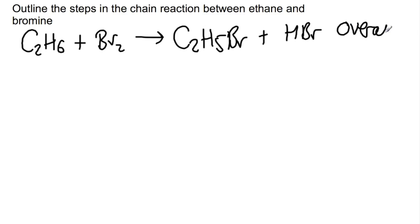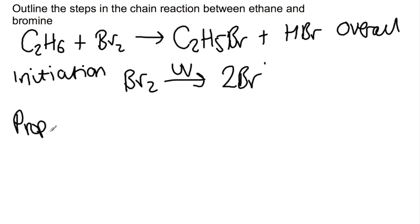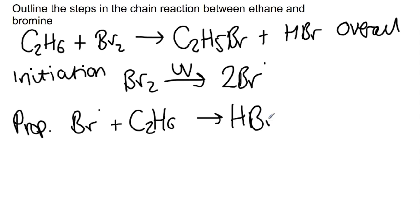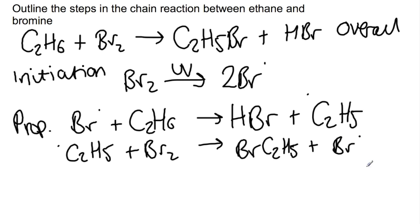The first steps are in the initiation, and this is always the same — you have your halogen with UV light splitting up to give you two halogen radicals. For the first propagation step, the bromine radical plus ethane reacts so the bromine radical takes one of the H's to give you HBr and leave behind C2H5 as a radical. The second propagation step takes this new ethyl radical and reacts with a bromine molecule to produce bromoethane and a bromine radical, which can carry on in propagation.